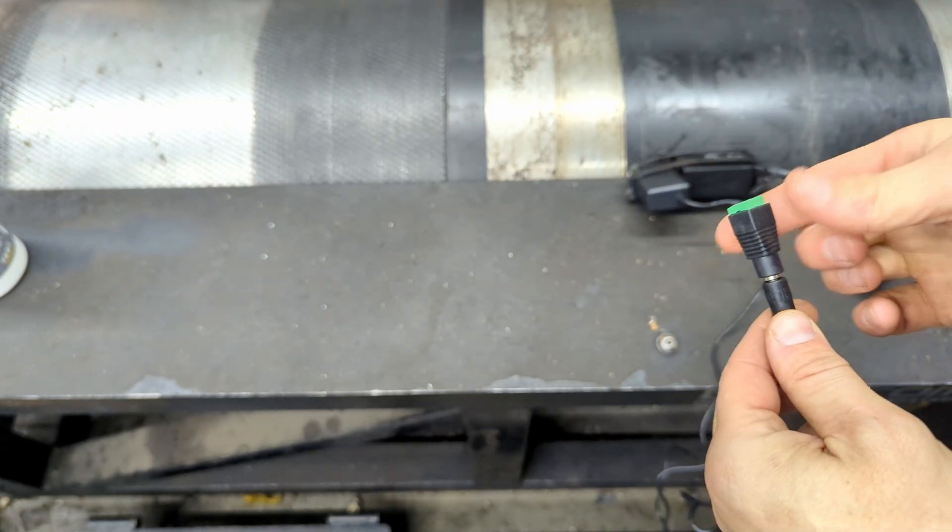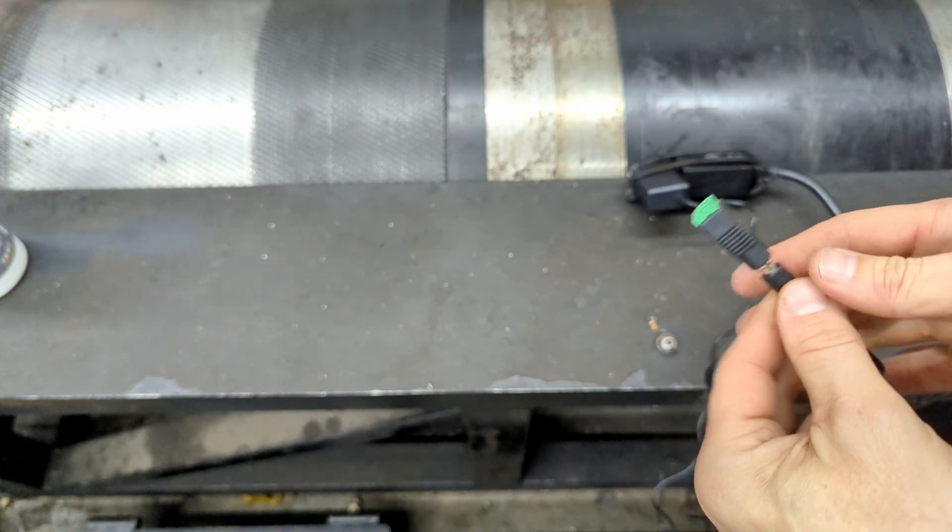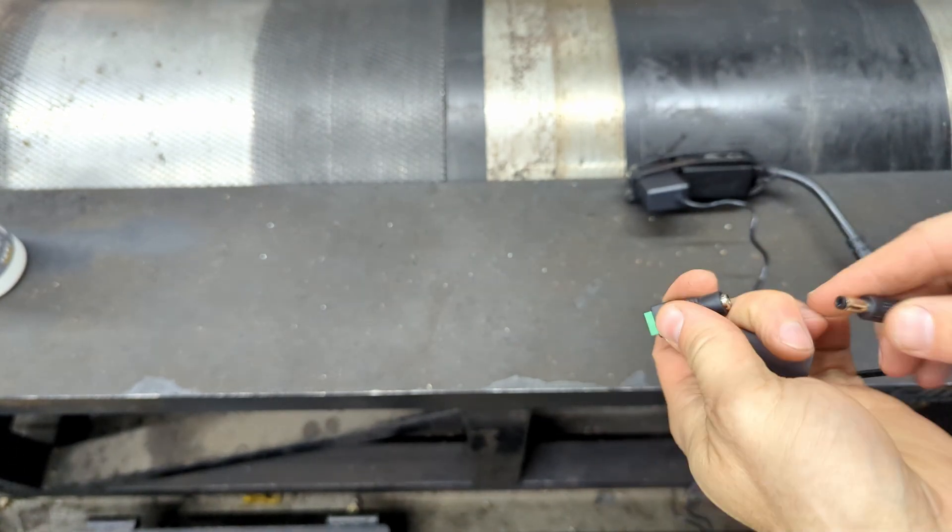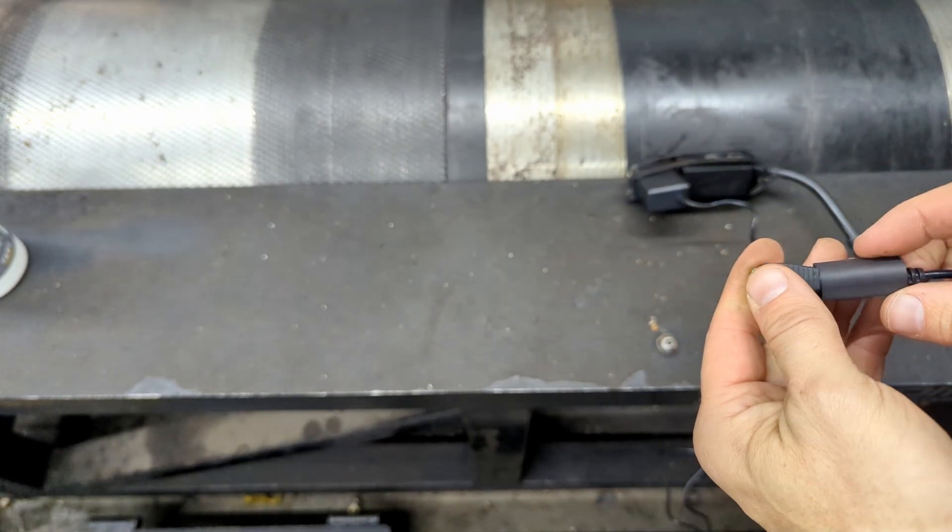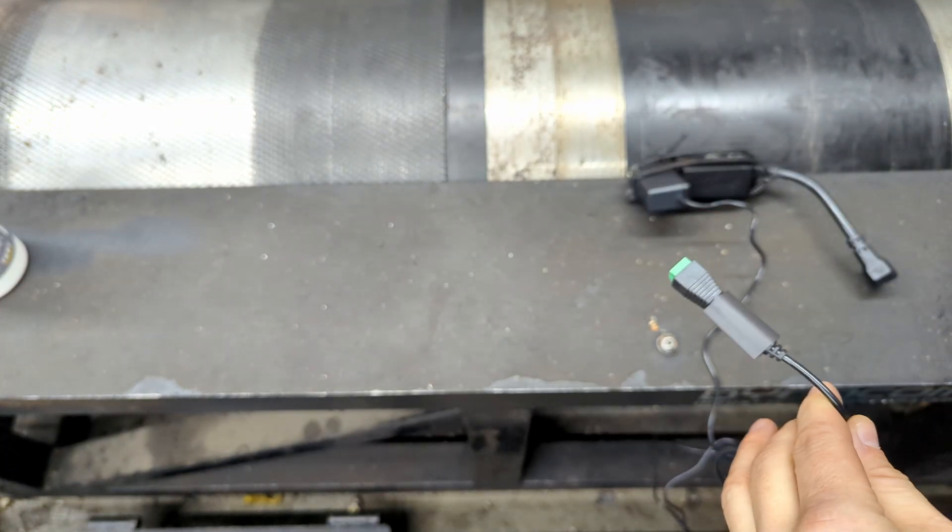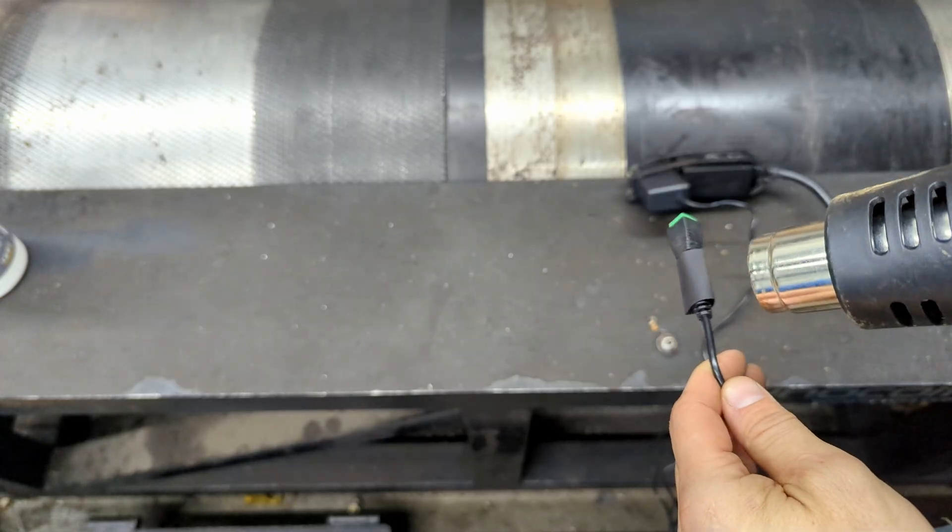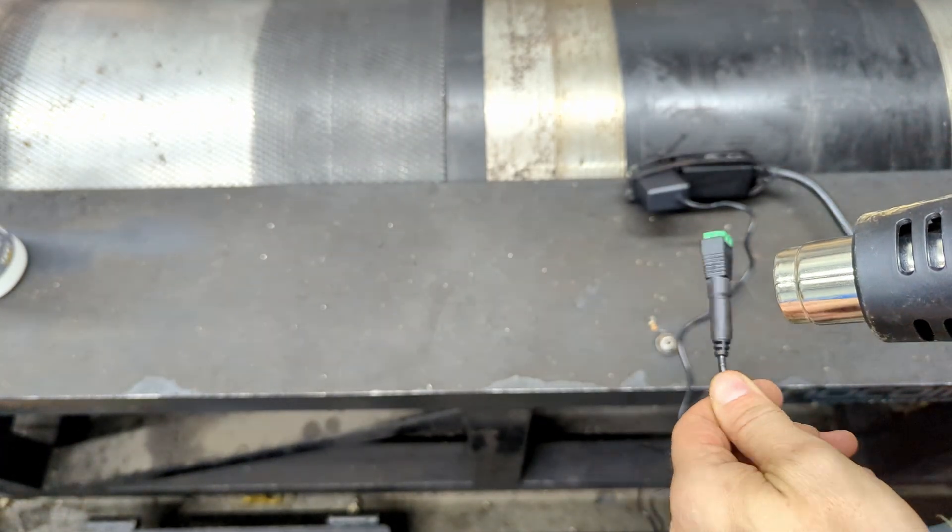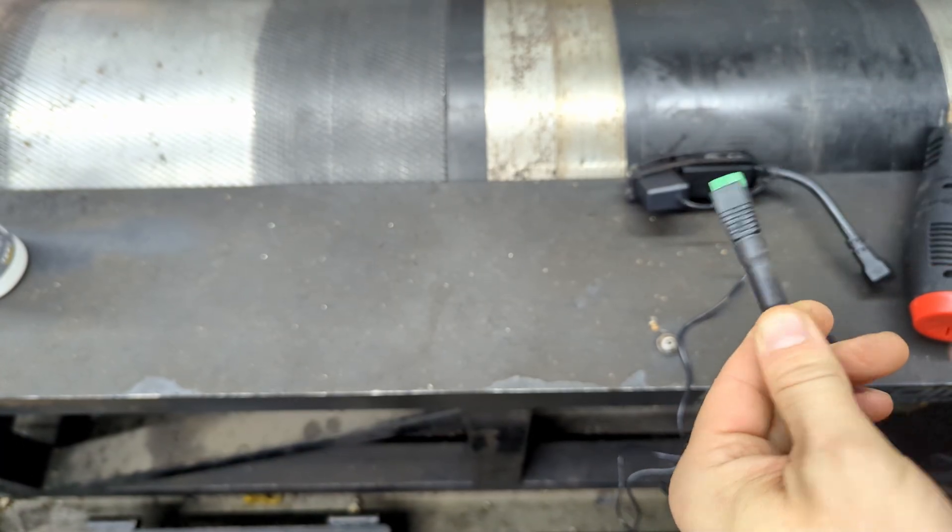But here we have another point of failure where that could come unplugged. Granted, the wiring is going to be routed nicely, but I still want to do what I can to help avoid that from happening. So what I'm going to do is I'm going to put a little piece of adhesive lined heat shrink on here. We're going to shrink it down. My heat gun. All right. Now we have a joint that does not want to come apart.